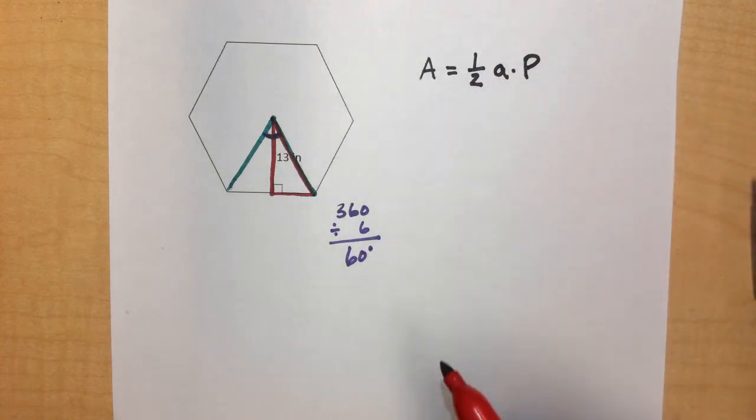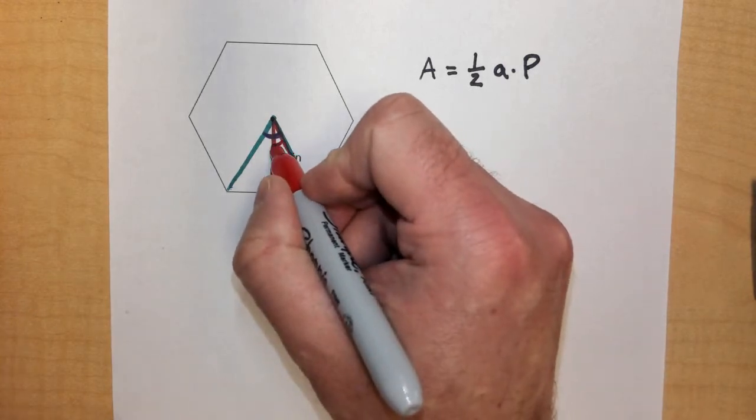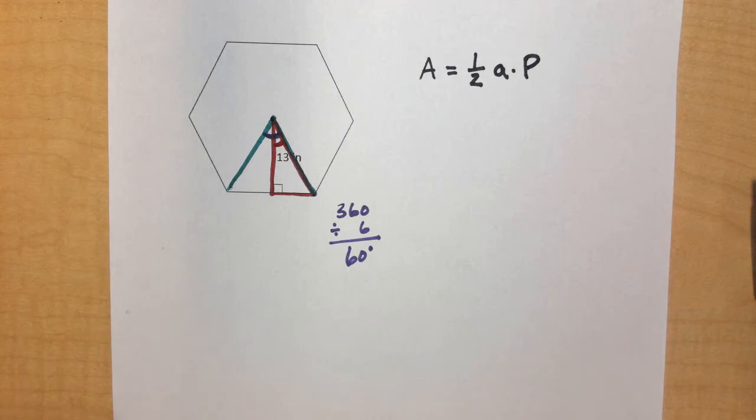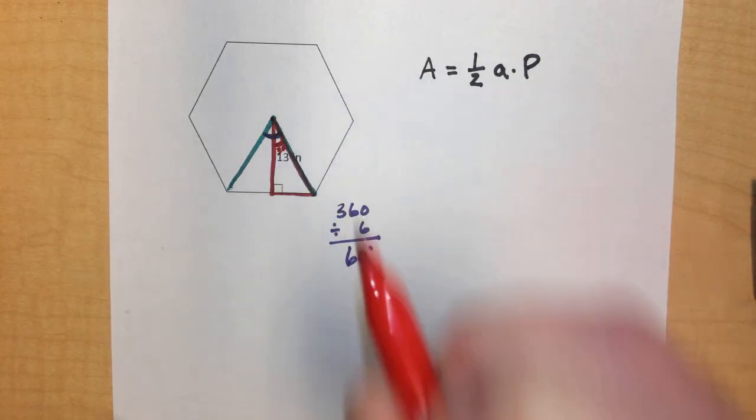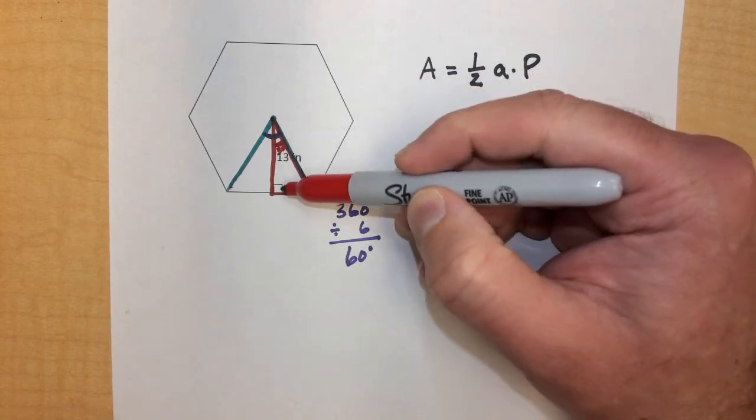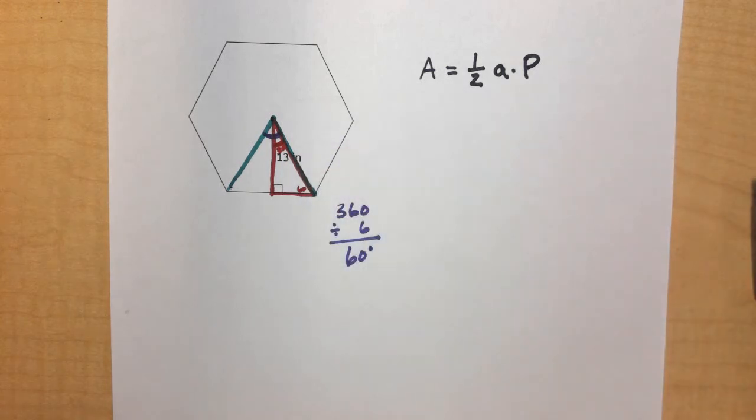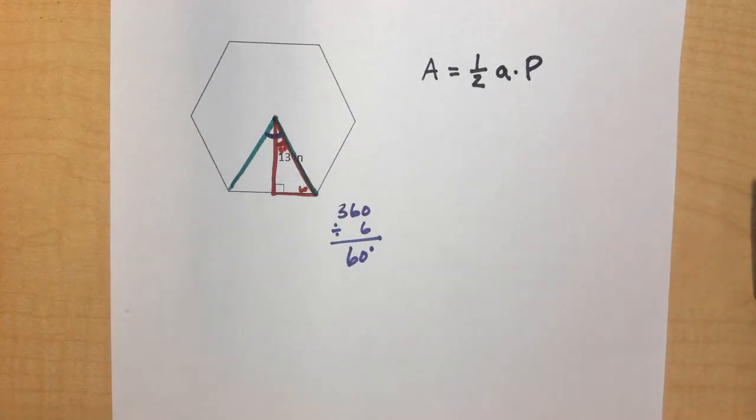So knowing that, if this central angle here is 60 degrees, then the angle for the smaller triangle we just created has to be half of that, which is 30 degrees. And because we have a 30 degree angle here, and it's a right triangle, I know that this other angle is going to be 60 degrees. So this is a 30, 60, 90 triangle, one of those special triangles we learned about that has special properties as it relates to their side lengths.